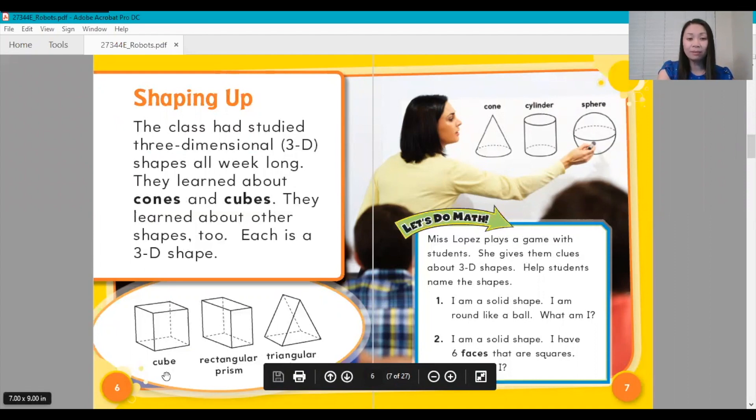Right here we have a cube, a rectangular prism, a triangular prism. At the top of the page we have a cone, a cylinder, and a sphere.